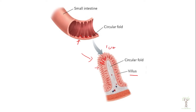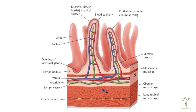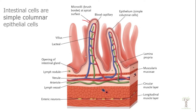If this is where the lumen is, our nutrients are going to need to move into each villus and then go into the bloodstream. If we zoom in, each single villus has this brush border or microvilli. Each one of these is an individual epithelial cell that also has an increased surface area.